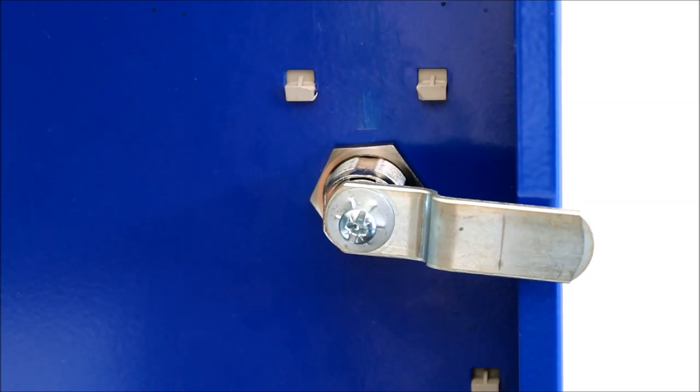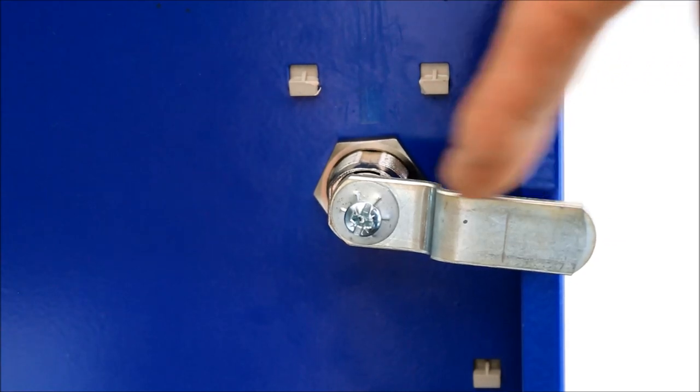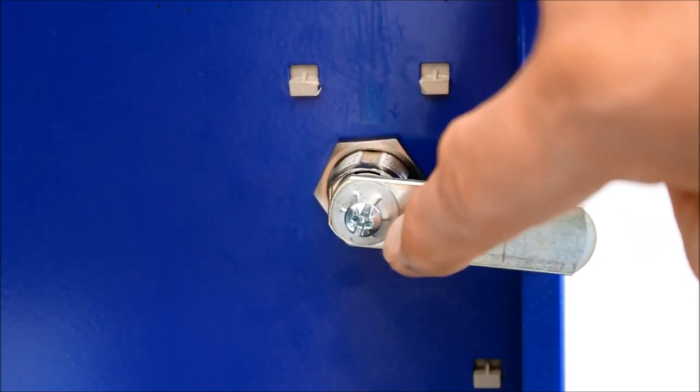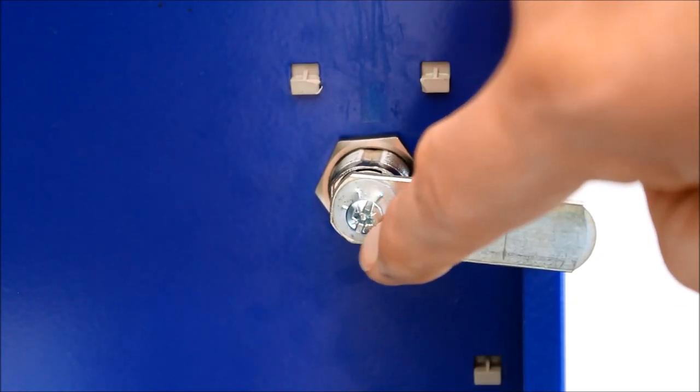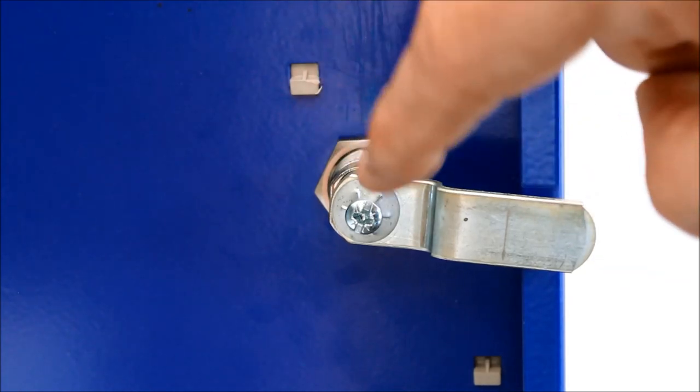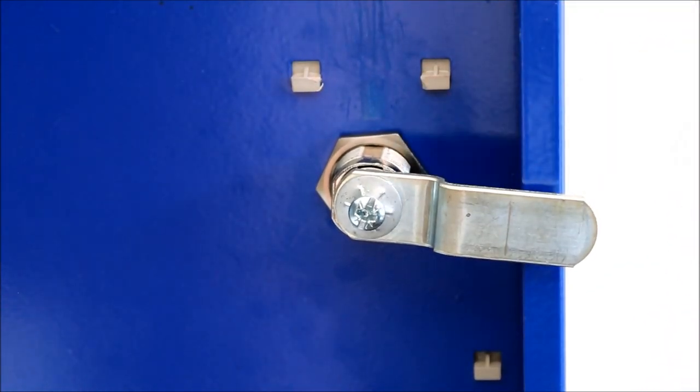Sometimes depending on the type of lock you've got, you may well have to remove this bar here. This bar we call a cam. They're often removed simply using a screwdriver like this one, or some are attached with a small black nut or a silver nut. Be careful because there are little washers that can come loose underneath, but in most occasions you won't have to remove this cam, but occasionally you will.